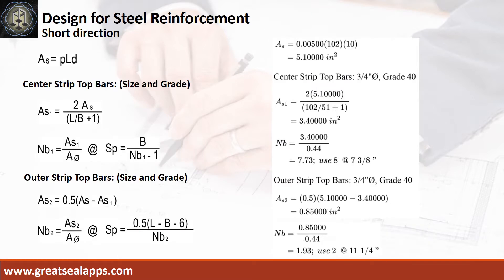Continuing at short direction, given rho equals 0.005, L equals 102 inches, and D equals 10 inches, the area of steel for short direction bars is 5.1 square inches, and the area of steel for center strip is 3.4 square inches, and the number of bars for 3/4-inch diameter is 8. The area of steel at outer strip is 0.85 square inch, and the number of bars for 3/4-inch diameter is 2 on each side.